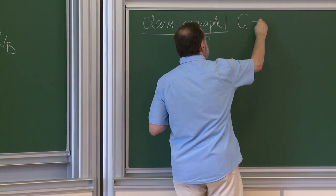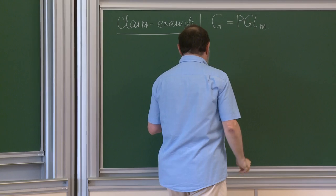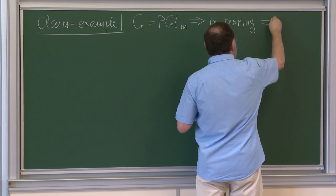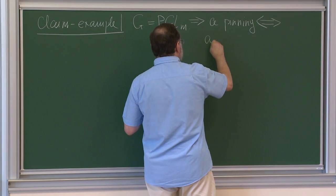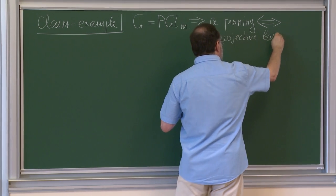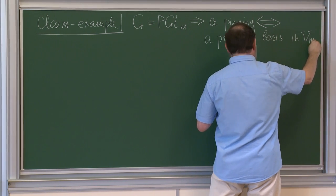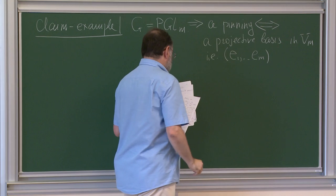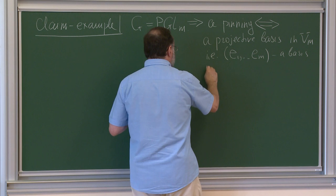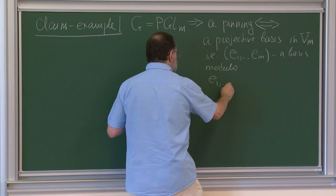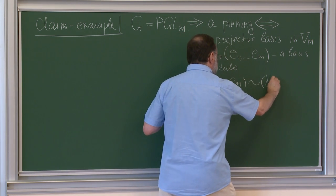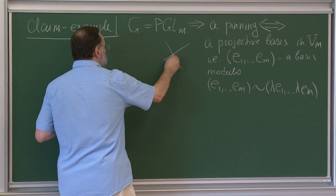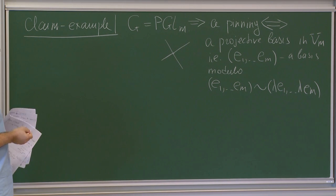Suppose G is PGL_m. Then I claim a pinning is the same thing as a projective basis in a vector space — a basis E1, ..., EM considered up to a common scalar lambda.